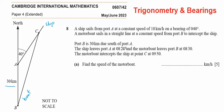Yes, the ship leaves port A at 8:20 and the motorboat leaves port B at 8:30. So if we write the data for the ship, it started at 8:20 and reached point C at 9:50. It means the time taken for the ship to reach point C is 1 hour and 30 minutes, which we can write in hours as 1.5 hours.